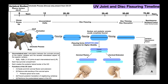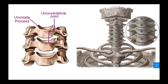As a quick review, the uncinate process or uncus is unique to the cervical spine, specifically segments C3 through C7. On either side of the vertebral body, there's a sharp projection that goes up superiorly — this is the uncinate process or uncus. Looking at a diagram of one cervical vertebra, the disc sits between the bodies, and on either side laterally — both on the right and the patient's left — you have this upward projection called the uncinate process.